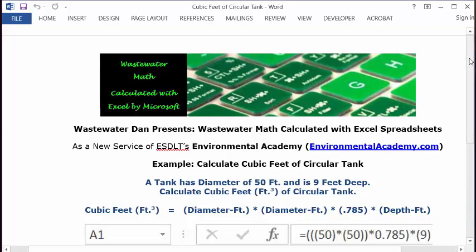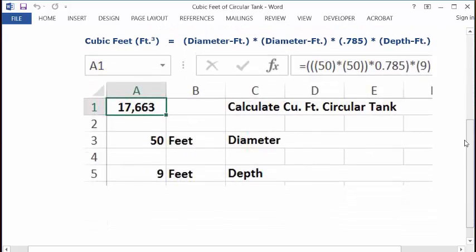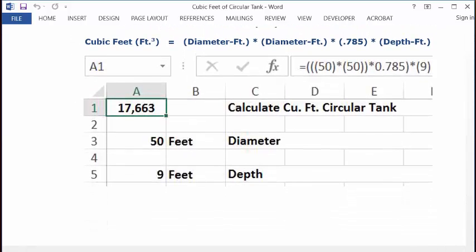So let's see how we put this in an Excel spreadsheet. This is very straightforward. We simply go to C1, type in the description, calculate cubic feet of circular tank.